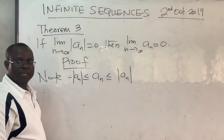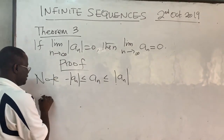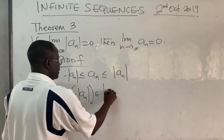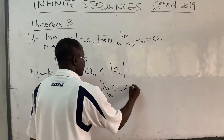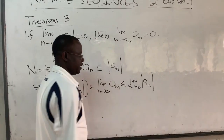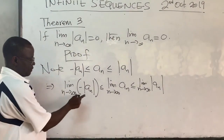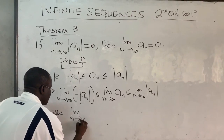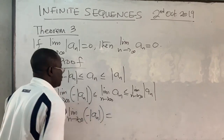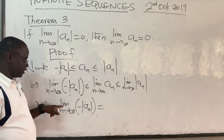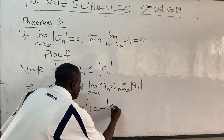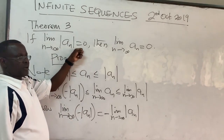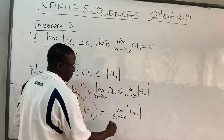From here, you find the limit as n goes to infinity of each term of this inequality: the limit of negative |aₙ| ≤ limit of aₙ ≤ limit of |aₙ|. Now, the limit as n goes to infinity of negative |aₙ| equals negative times the limit of |aₙ|, by the limit laws. From the theorem, we are given that the limit of |aₙ| goes to zero, so this is equal to zero.